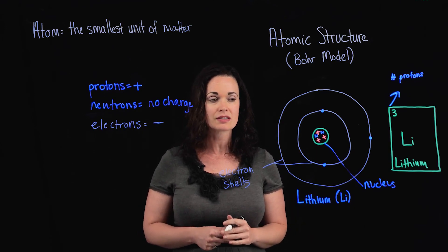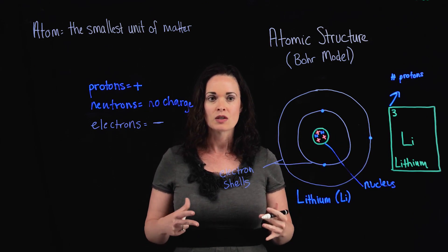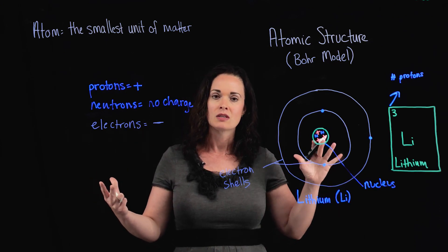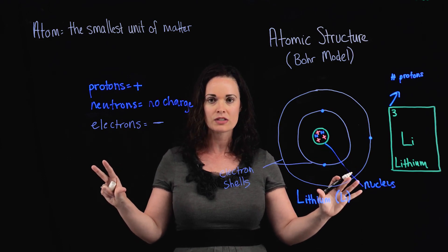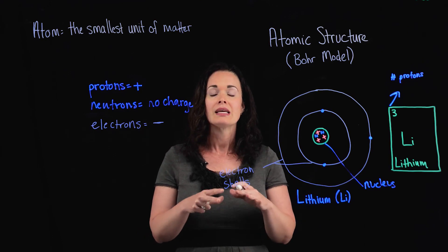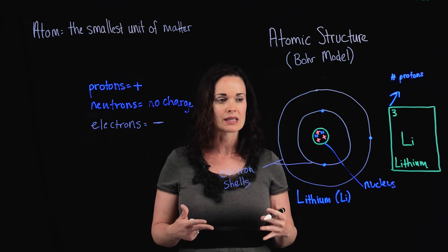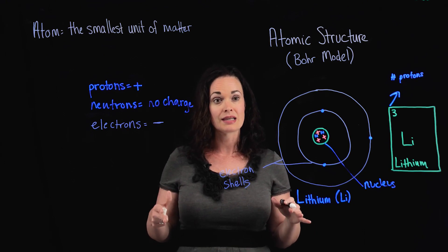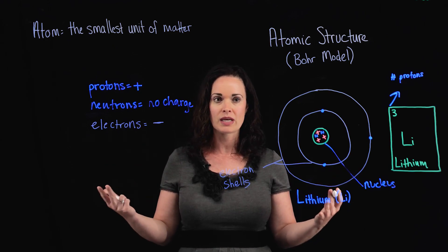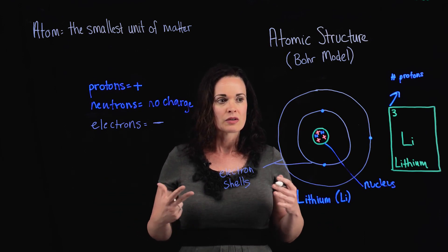Electrons have a negative charge. We talked about lithium having an atomic number of three — three protons, or positive charges, in the nucleus. Notice it also has one, two, three electrons. Atoms always have equal numbers of protons and electrons — equal positive and negative charges — which means that an atom overall has a neutral charge in normal circumstances. The positive protons cancel out the negative electrons. In an upcoming video we'll talk about an exception to that, but normally atoms do not have a charge.